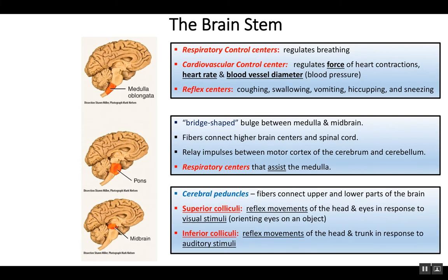The most superior region of the brainstem is known as the midbrain. The midbrain contains two components. One is the cerebral peduncles — the word peduncle means a connection — because it also has fibers running through it to connect to upper parts of the brain, coming up from the spinal cord through the medulla, through the pons, through the midbrain. Posteriorly located are the colliculi: a superior colliculi and below it a smaller inferior colliculi, which look like little mounds projecting off the posterior part of the midbrain.